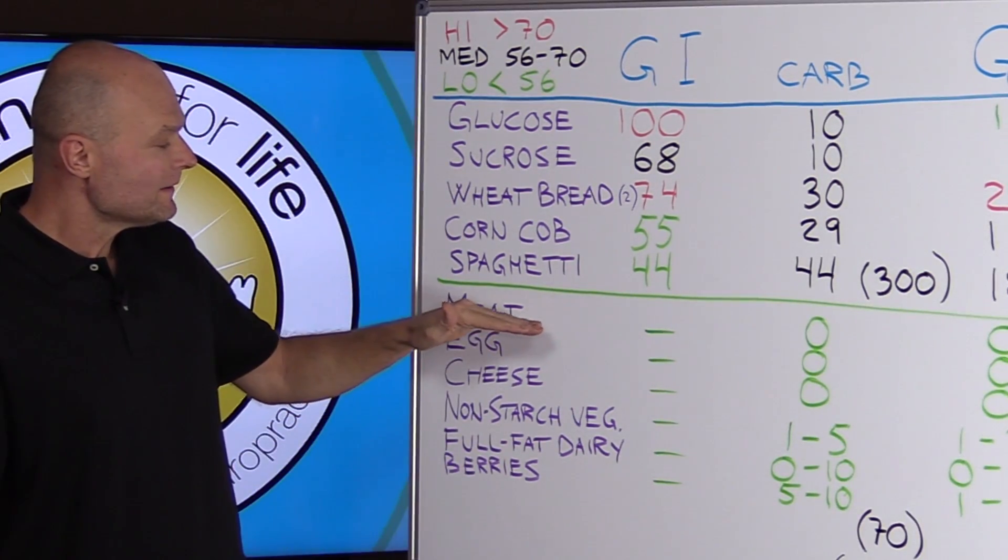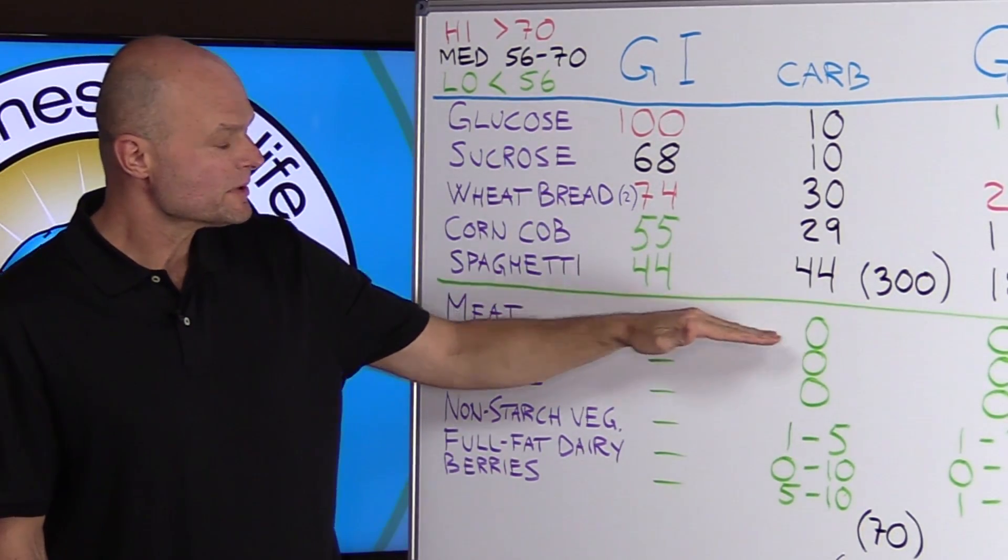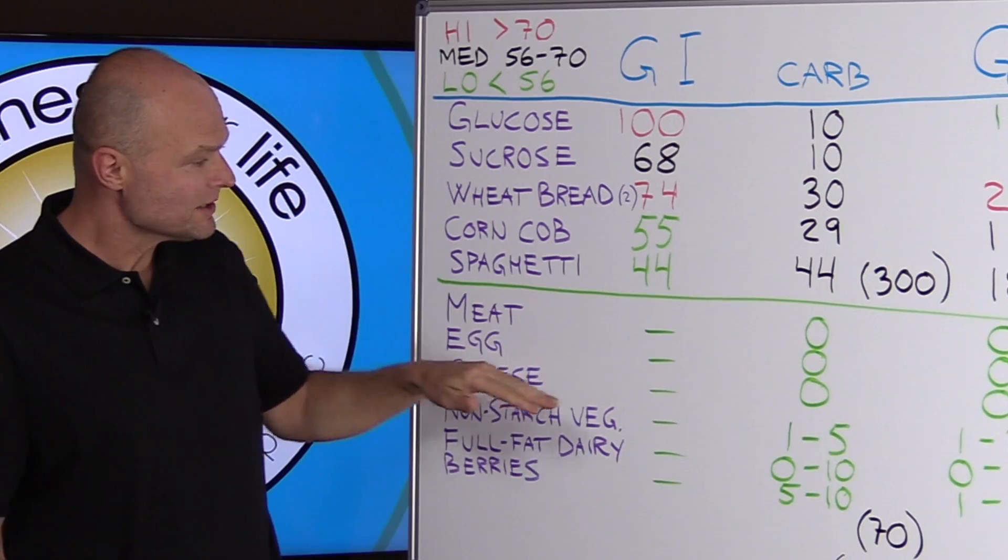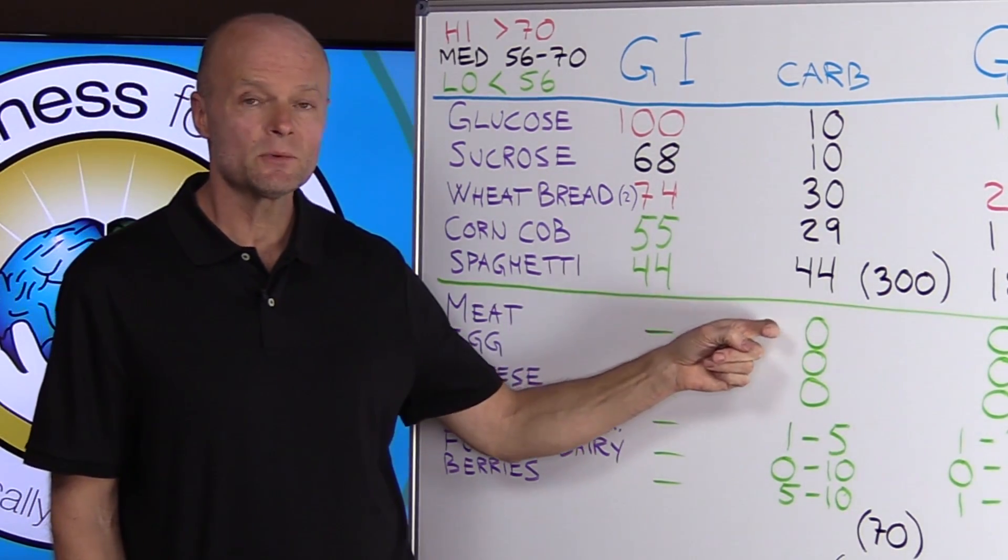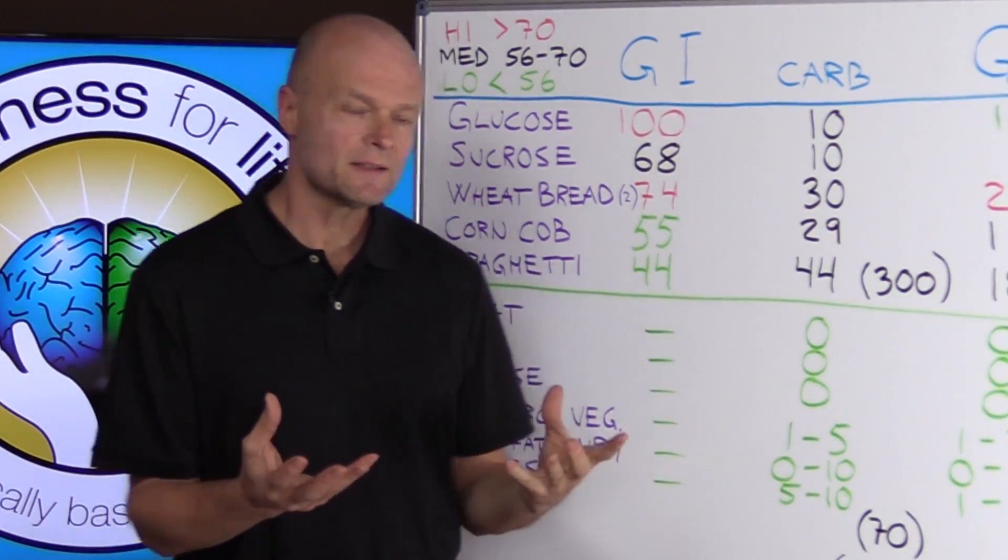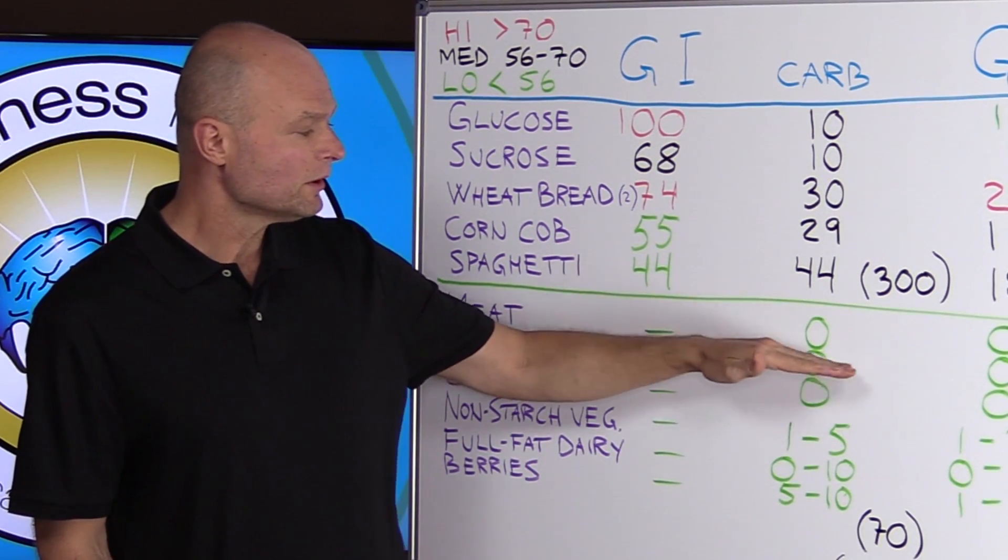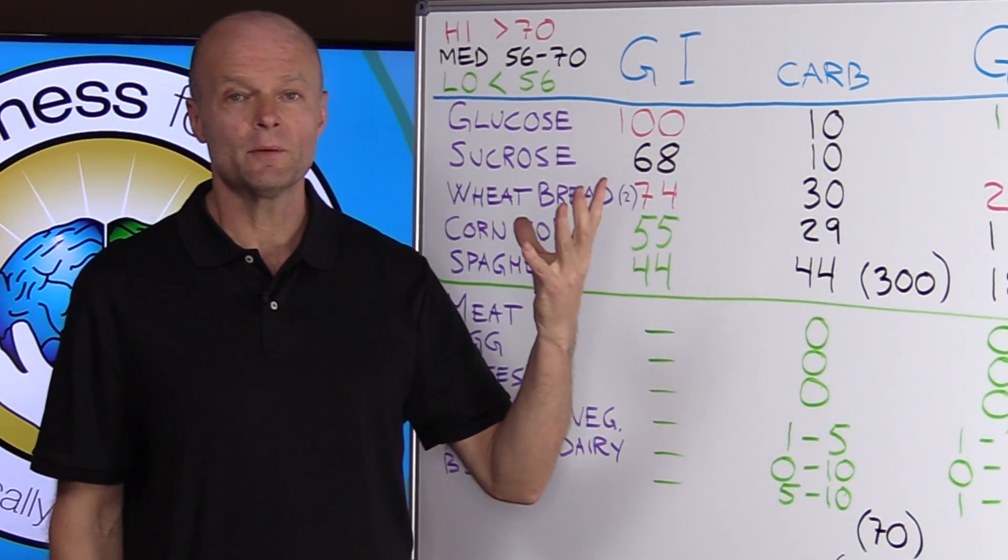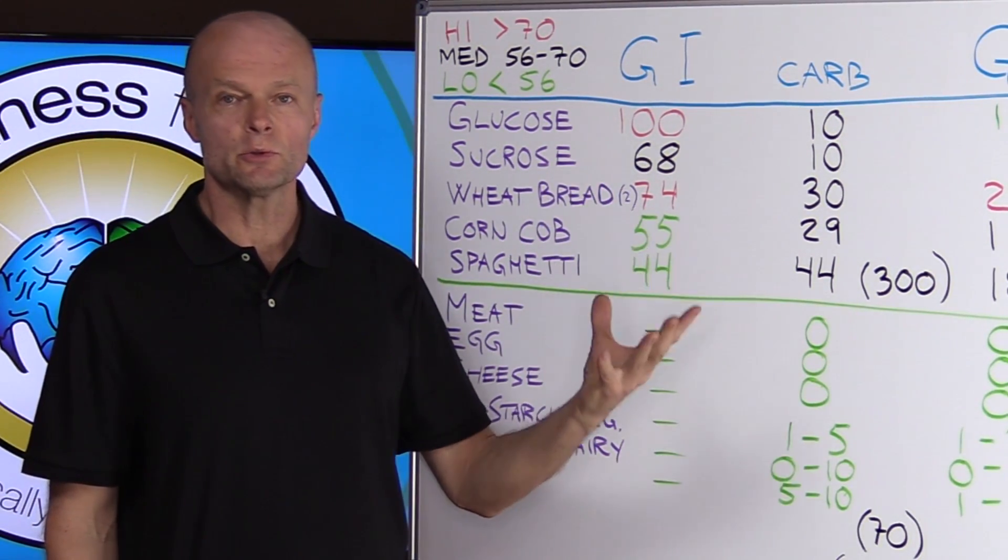And then when we look at the number of carbs per serving of meat, egg, and cheese, we find that they are zero, zero, zero. So on a keto diet, this is what we want to look for. We want to eat foods that are basically zero or close to it.